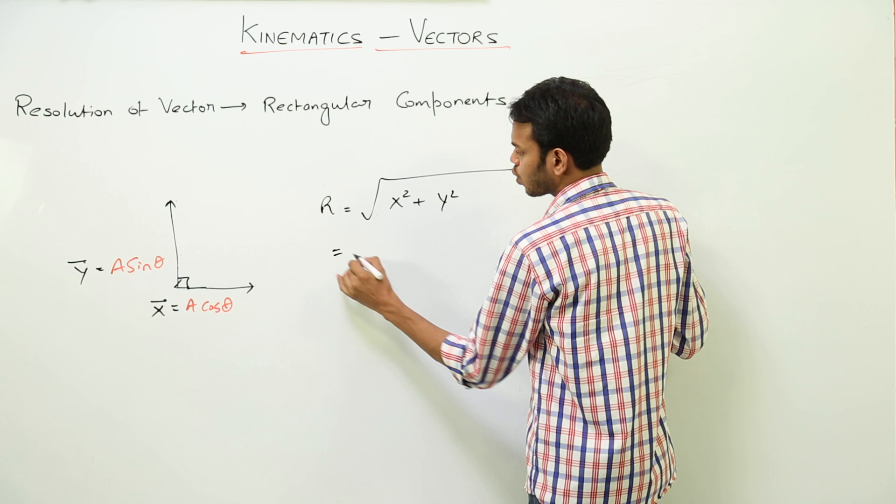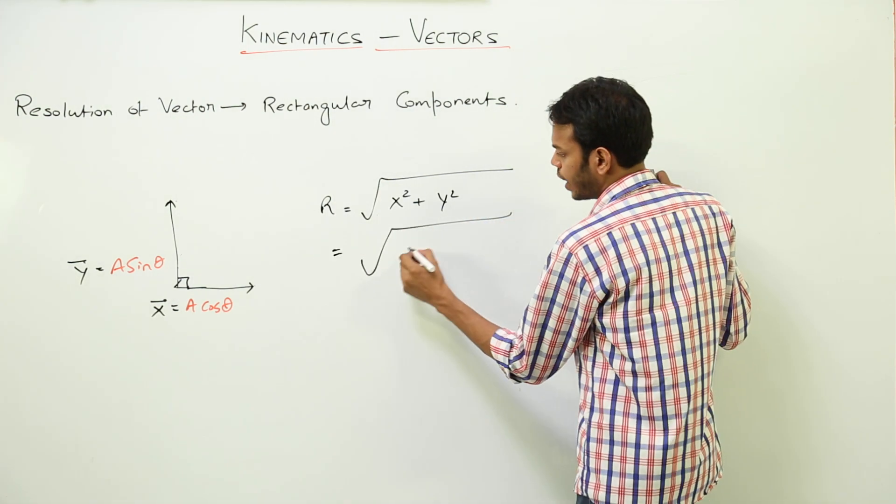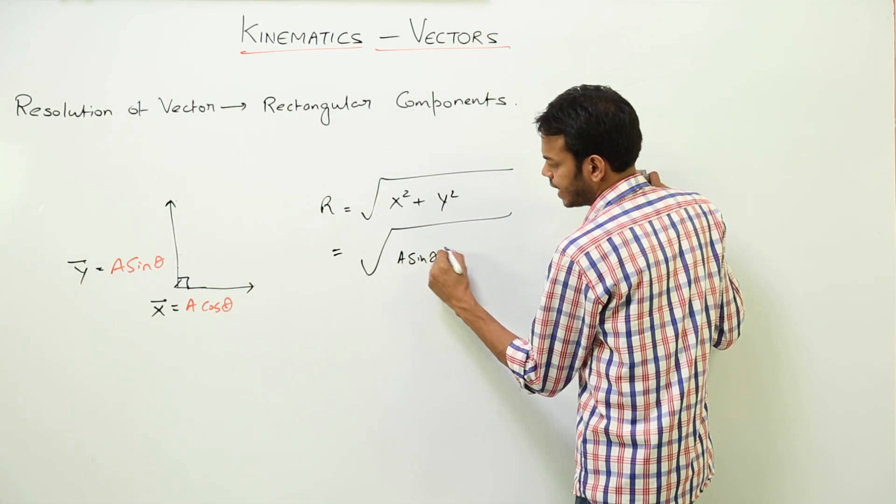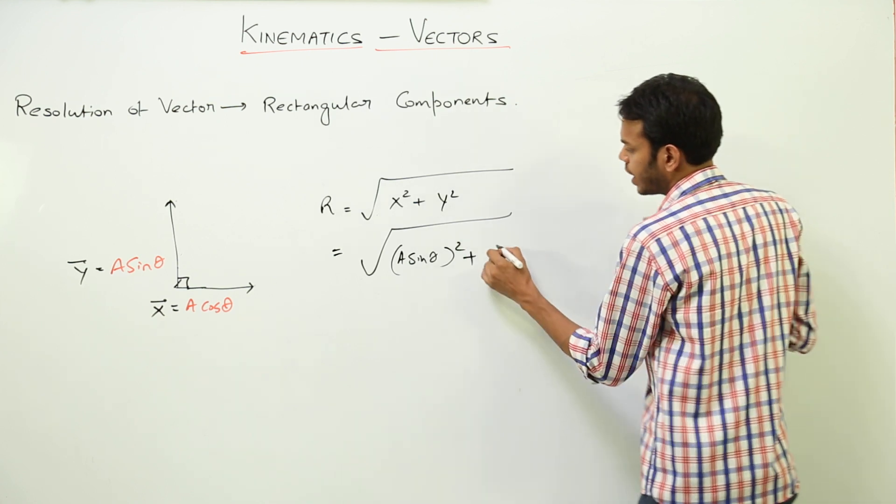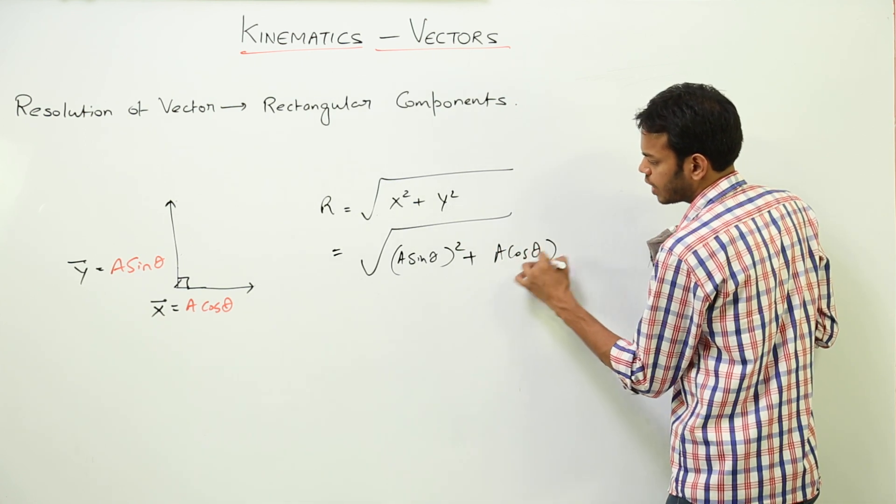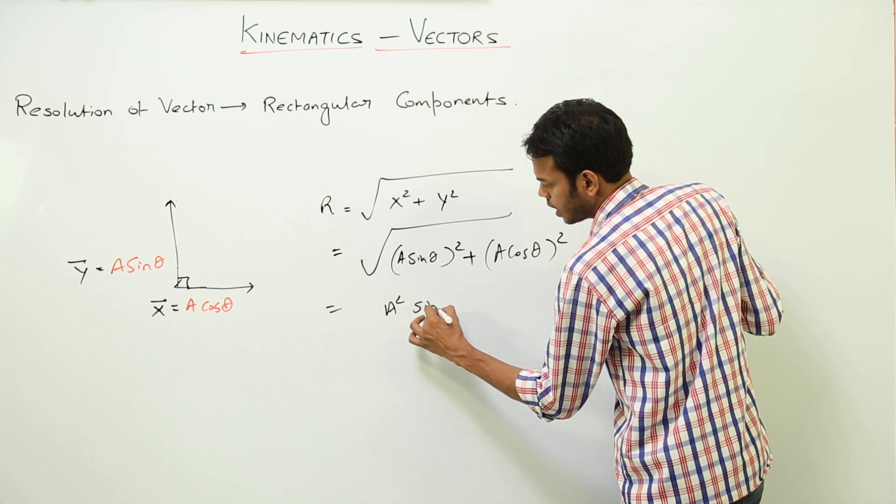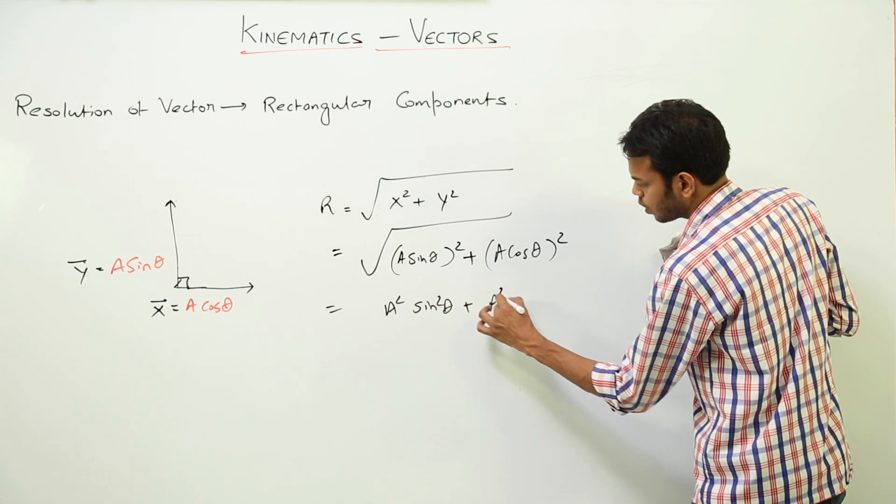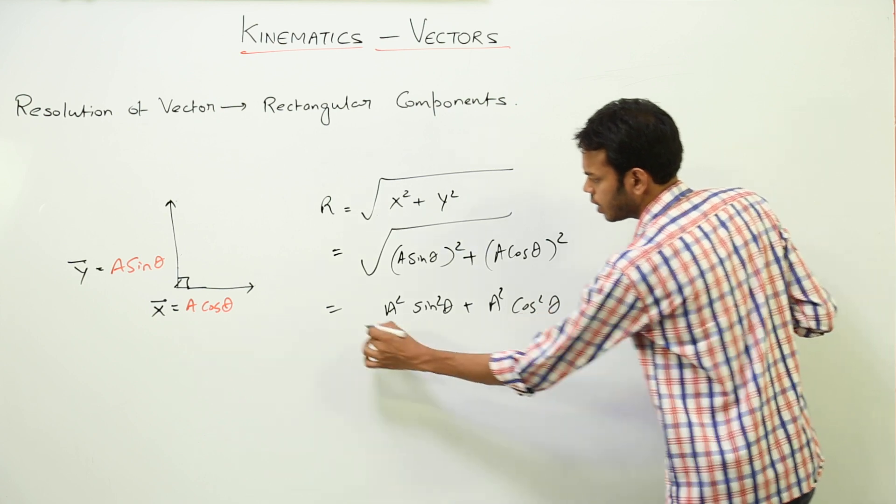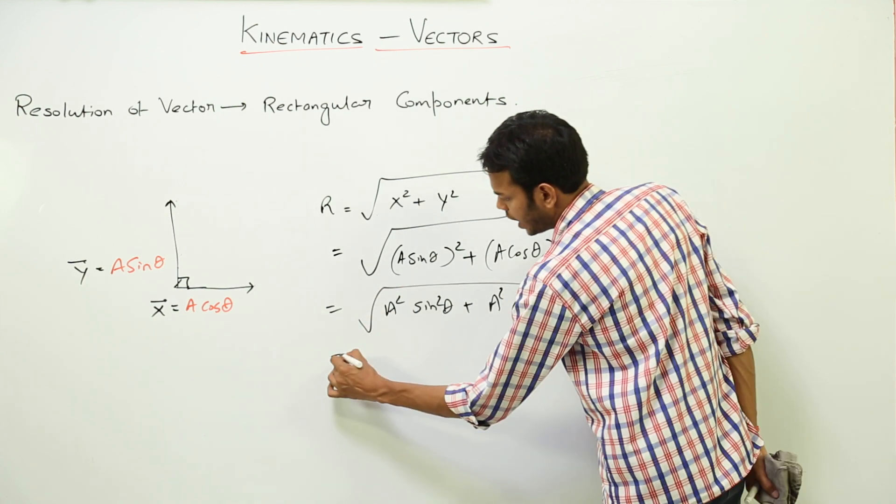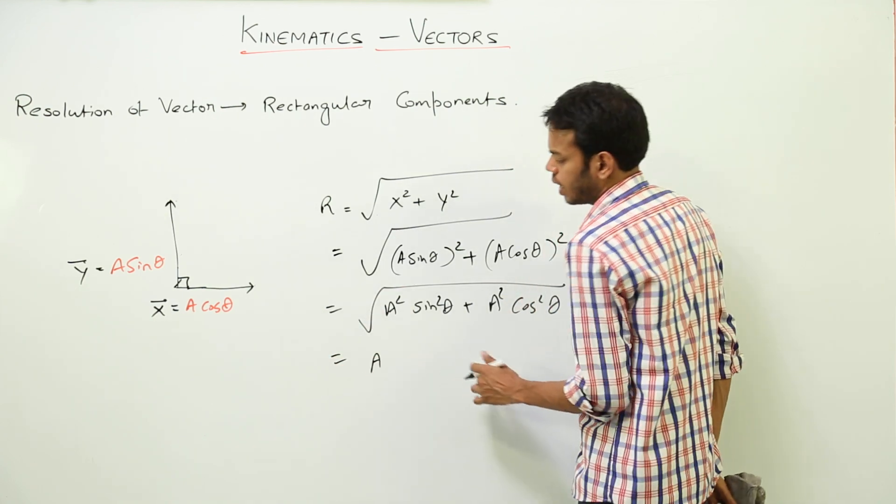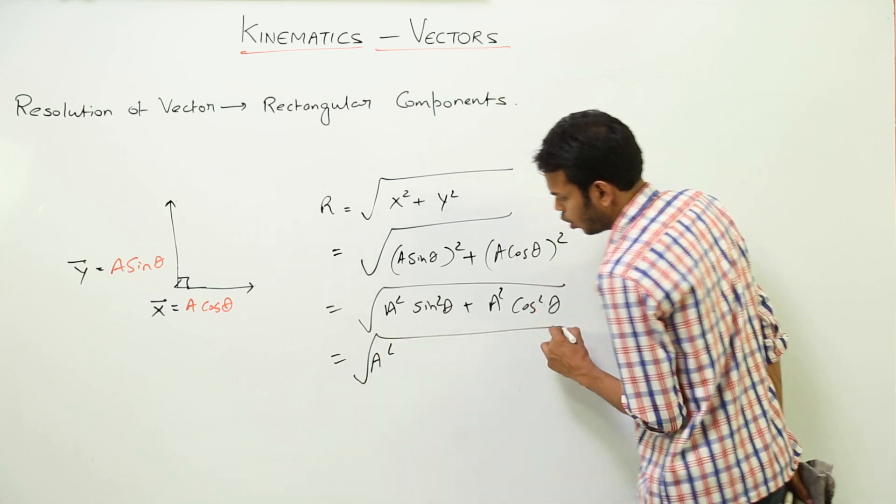So we are left with under root X square plus Y square. X square is A sin theta square, plus Y square is cos of theta square. So this becomes A square sin squared theta plus A square cos square theta, under root. If you take A square common out, you'll be left with sin square theta plus cos square theta.